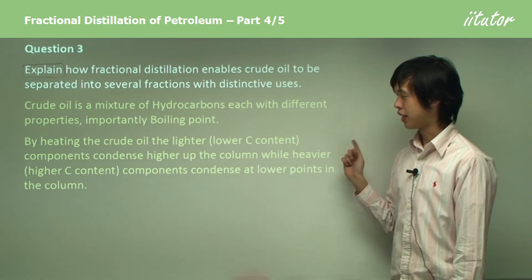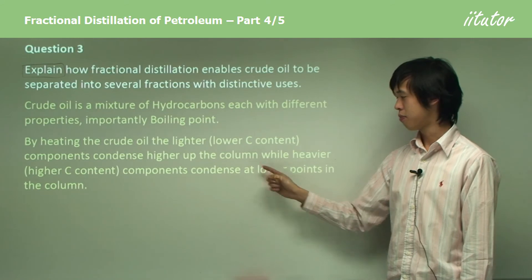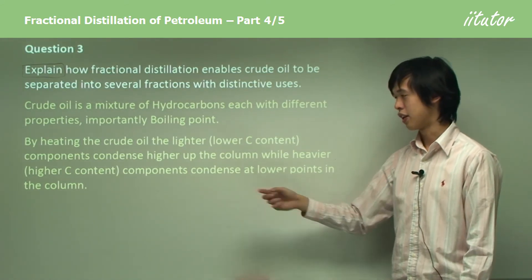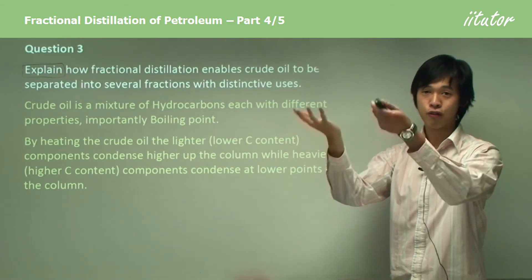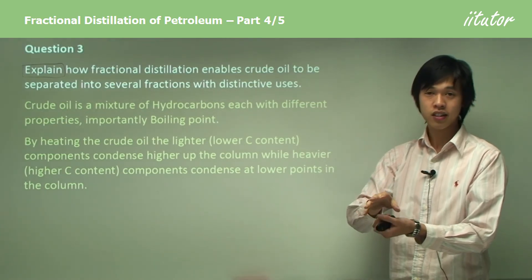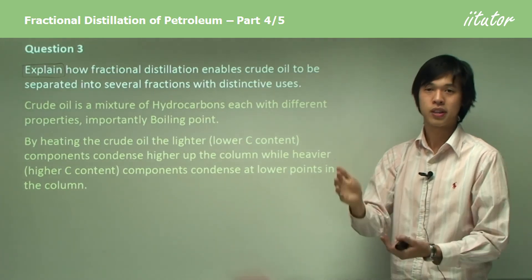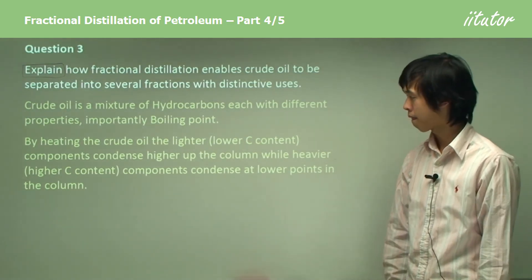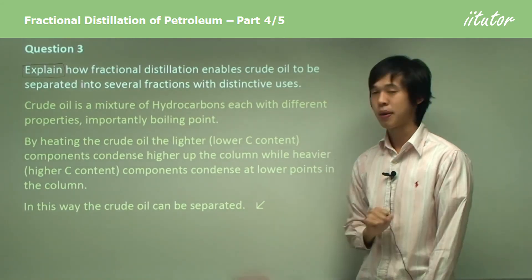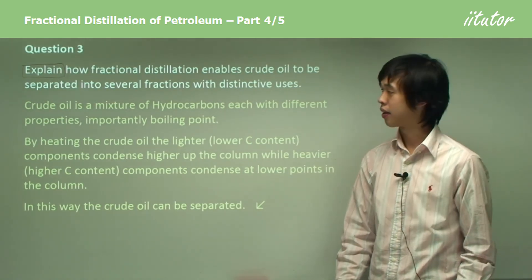By heating the crude oil, the lighter or lower carbon content components condense further up the column, while heavier or higher carbon content components condense at lower points in the column. This is simply because there is a temperature gradient — close to the heat source is very hot, far away is very cold, and in between are intermediate temperatures. In this way, by allowing components to condense at different points, we can separate the different fractions based on their boiling point.